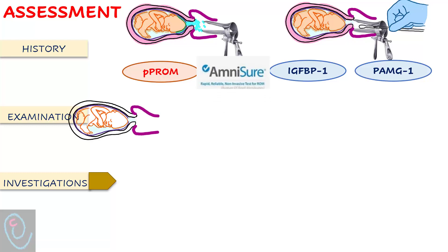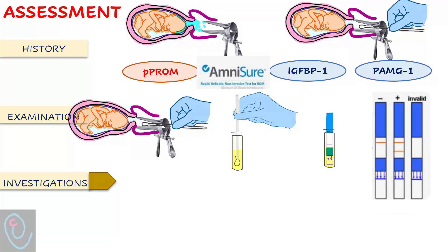A sterile swab is inserted into the vagina for one minute, then placed in a vial containing a solvent for one minute, and then an Amnesure test strip is dipped into the vial. The test result is revealed by the presence of one or two lines within the next 5 to 10 minutes.